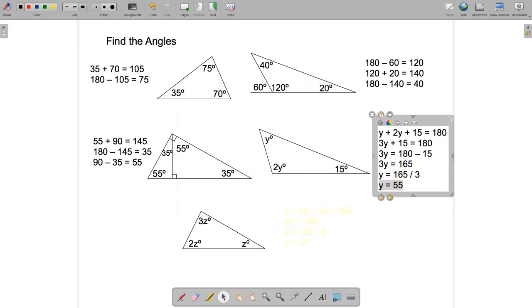So y is equal to 55 degrees, and you can check that that's correct, because if y is 55, 2y will be 110, and then 15, add those three angles together, you get 180 degrees.